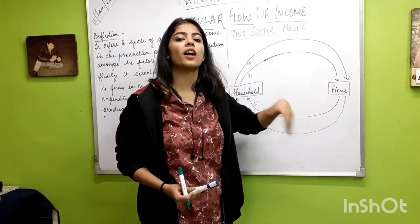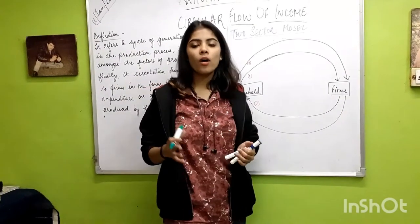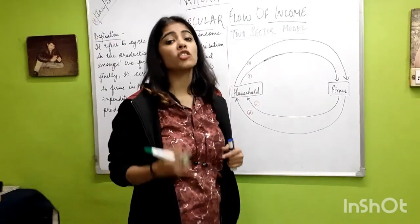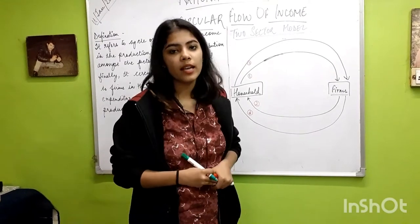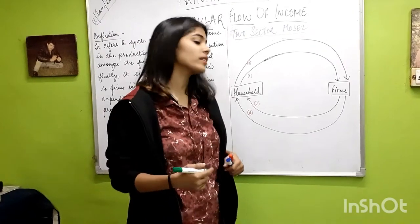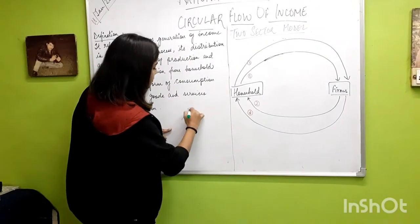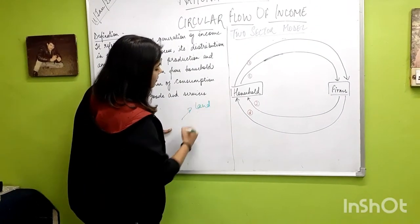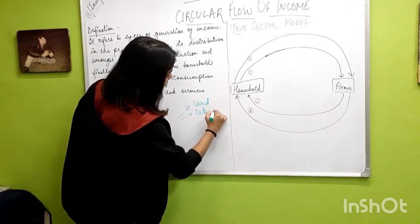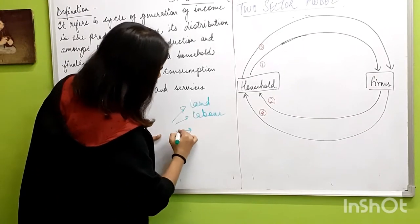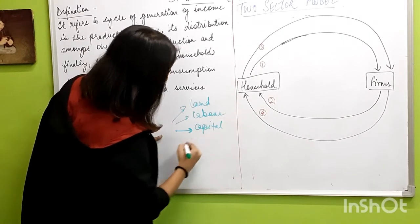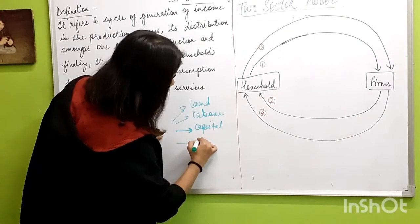For production, we need four factors of production. What are the four factors of production? First is land, second is labor, third is capital, and fourth is entrepreneur.